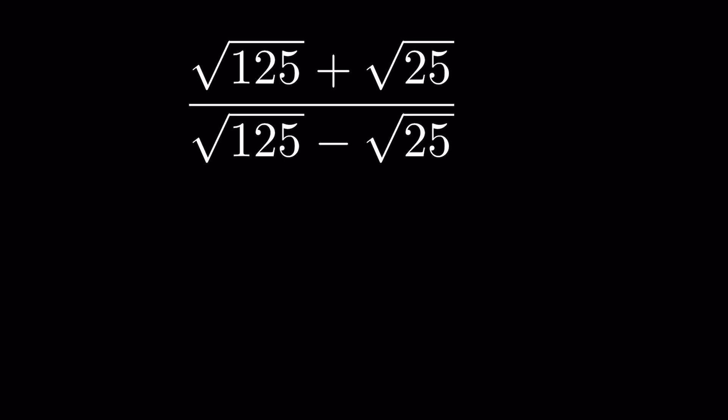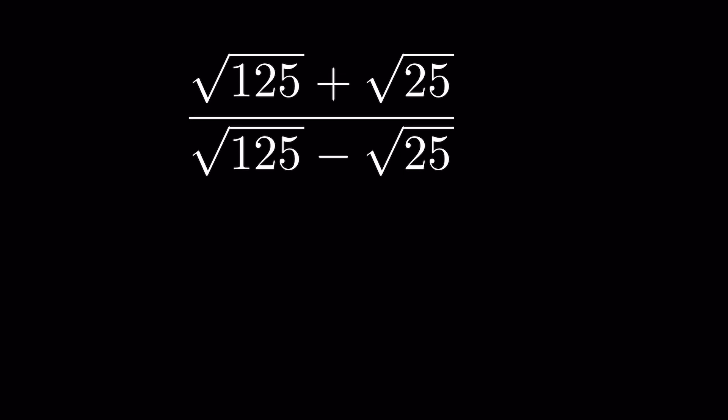We have the expression: square root of 125 plus square root of 25, all over square root of 125 minus square root of 25. How do we simplify this? There are two ways that we can simplify this. First, we simplify the radicals.